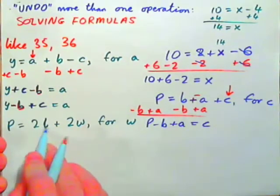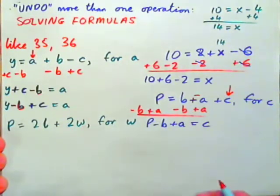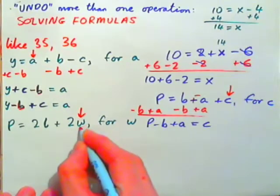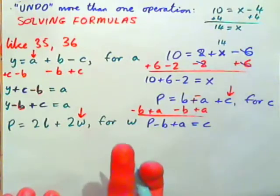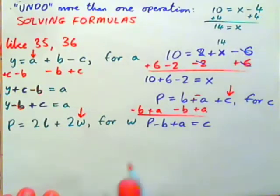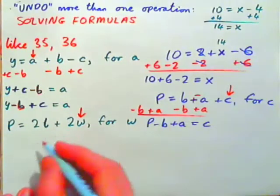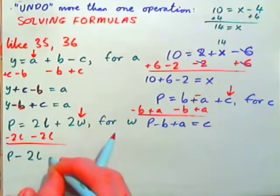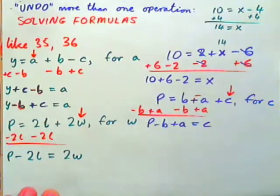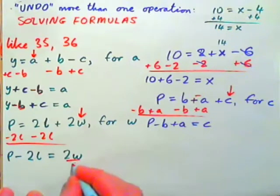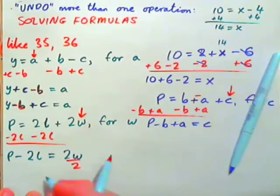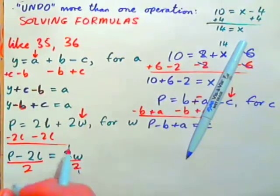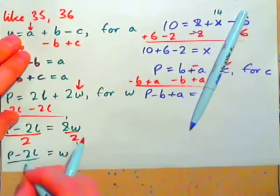P equals 2L plus 2W — solve for W. First, put an arrow above the W you want to find. W has been multiplied by 2, then 2L is being added. Always do the last operation first, so subtract 2L from both sides first: P minus 2L equals 2W. Now we have 2 being multiplied by W, so divide both sides by 2. The 2s cancel, giving P minus 2L all over 2 equals W.